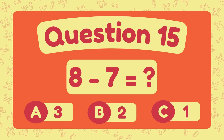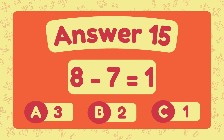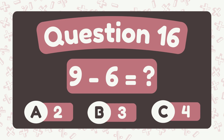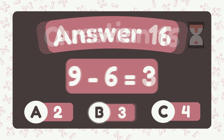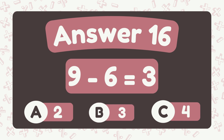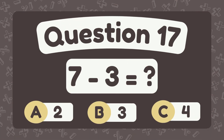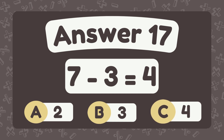What is 8 minus 7? The answer is 1. What is 9 minus 6? The answer is 3. What is 7 minus 3? The answer is 4.